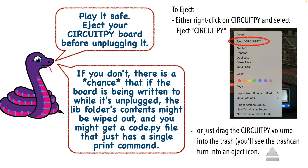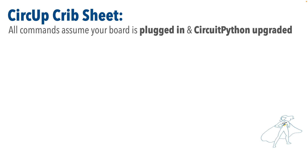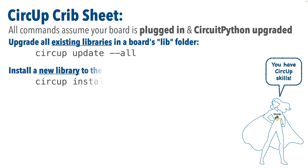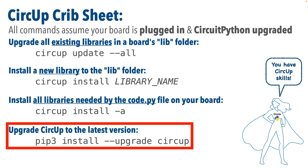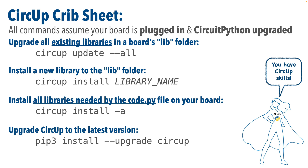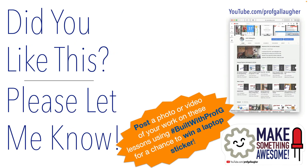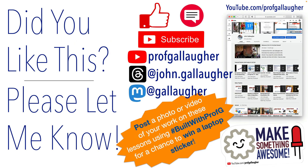Hackers, you've now installed Circup on your computer, so you should never have to do that again. You know the basic commands that are most useful. I've added one more command at the end of the crib sheet here: 'pip3 install --upgrade circup'. This upgrades the Circup program if a new version is available, and that product is always being revised, so it's not a bad idea to run that before you run Circup. You are now ready to easily install and upgrade any CircuitPython libraries that your project needs. You are now most ready to continue to hack.